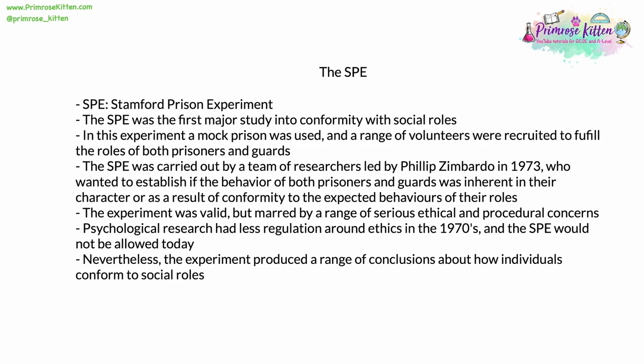The SPE was carried out by a team of researchers led by Philip Zimbardo in 1973. They wanted to establish if the behaviour of both prisoners and guards was inherent in their character, or conformity to the expected behaviours — the social norms of their roles that they had been given. The experiment was valid and scientifically reasonable, but it was marred by a range of extremely serious ethical and procedural concerns. Psychological research in the 1970s had a lot less regulation, such as ethics committees. The SPE would never be allowed today — the ethical issues were far too severe.